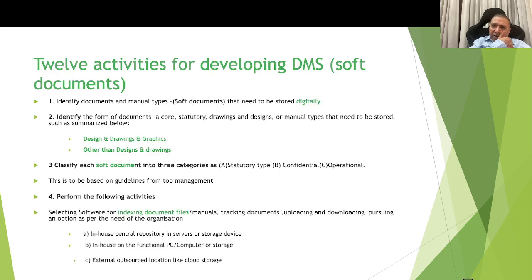The 12 activities important for developing and implementing the DMS solution are: Activity 1 — identifying the document and manual types that need to be stored digitally; Activity 2 — identifying the form of documents, whether core, statutory, drawings and designs, etc.; Activity 3 — classifying each soft document into three categories: strategy type, confidential type, and operational type, based on guidelines from top management.